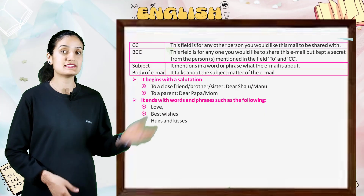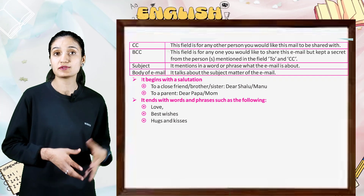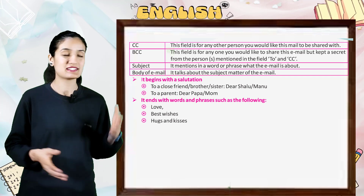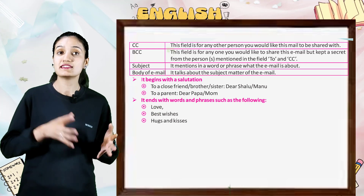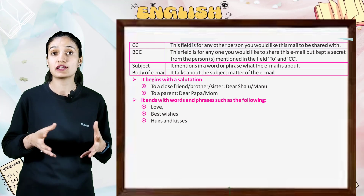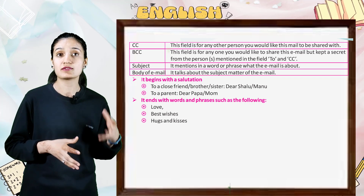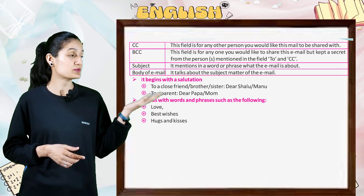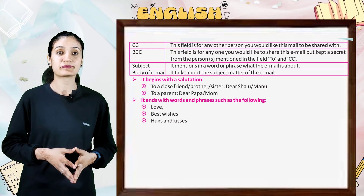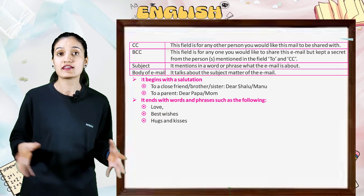'CC' — this field is for any other person you would like this mail to be shared with. 'BCC' — this field is for anyone you would like to share this email with but kept a secret from the person mentioned in the 'To' and 'CC' fields. 'Subject' — it mentions in a word or phrase what the email is about.